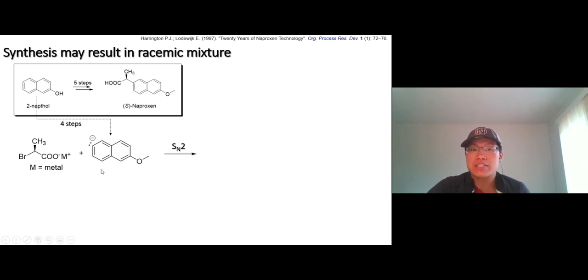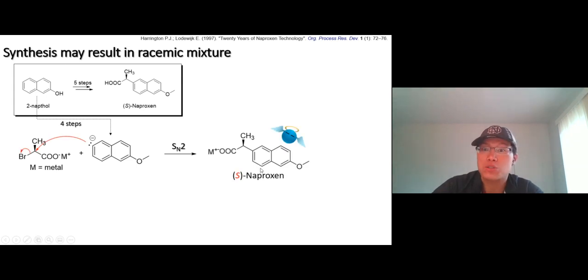If this goes SN2 reaction - what's the mechanism of SN2? Backside attack. Once that happens, bam, you get S-naproxen right away. And SN2 reaction is stereospecific, which means that if you start with R, you're gonna get only S. You're not gonna get the R-naproxen which is toxin that will kill your liver. So this is what we want to happen.